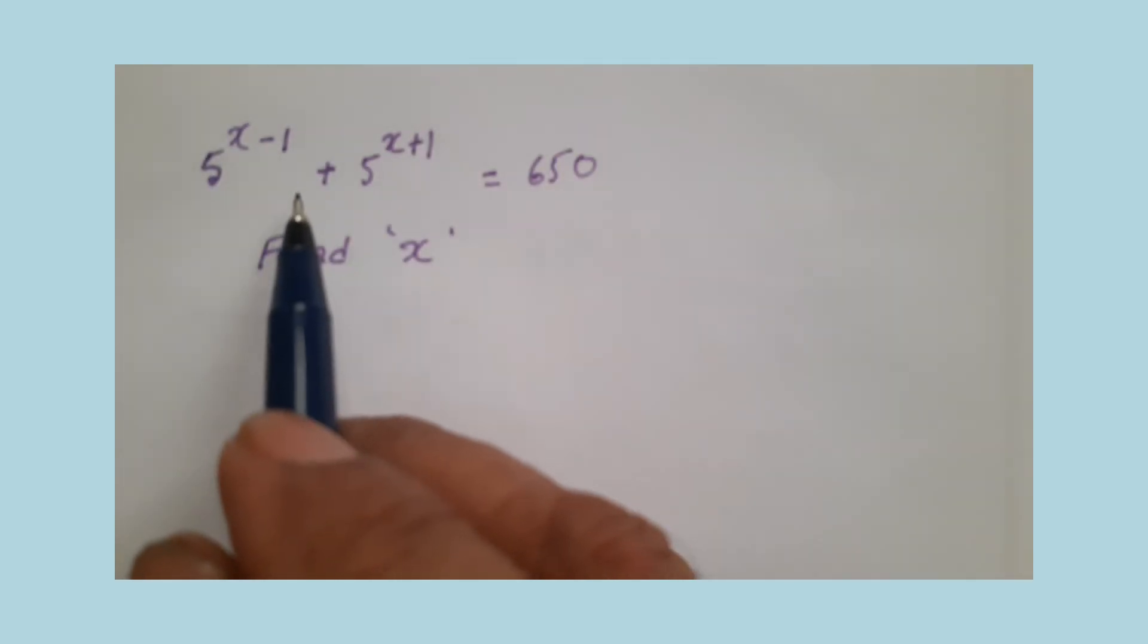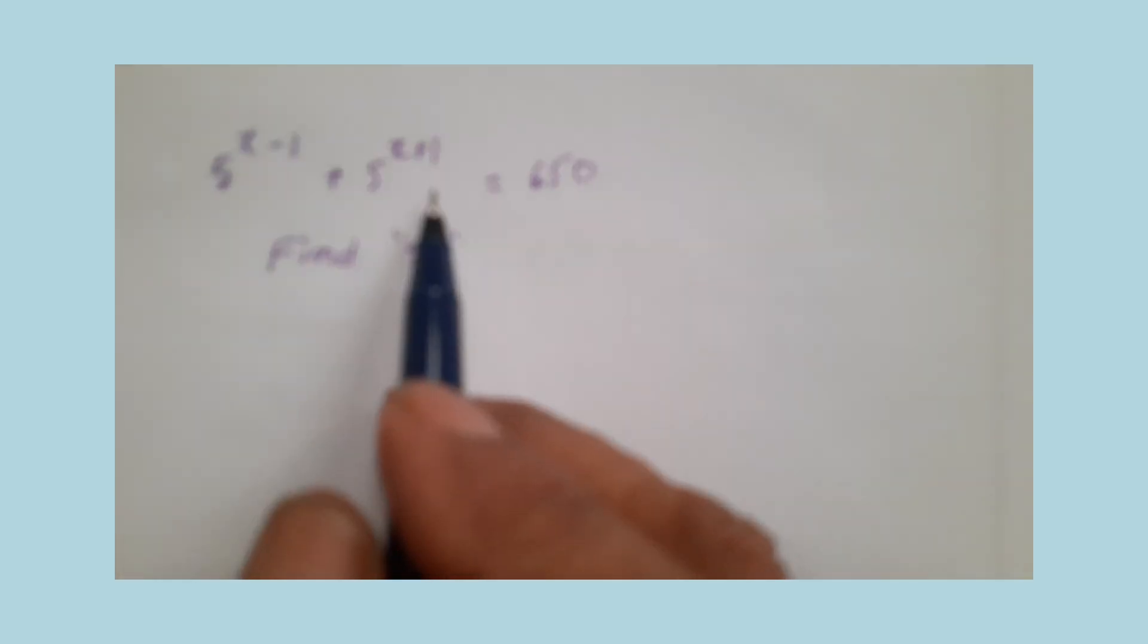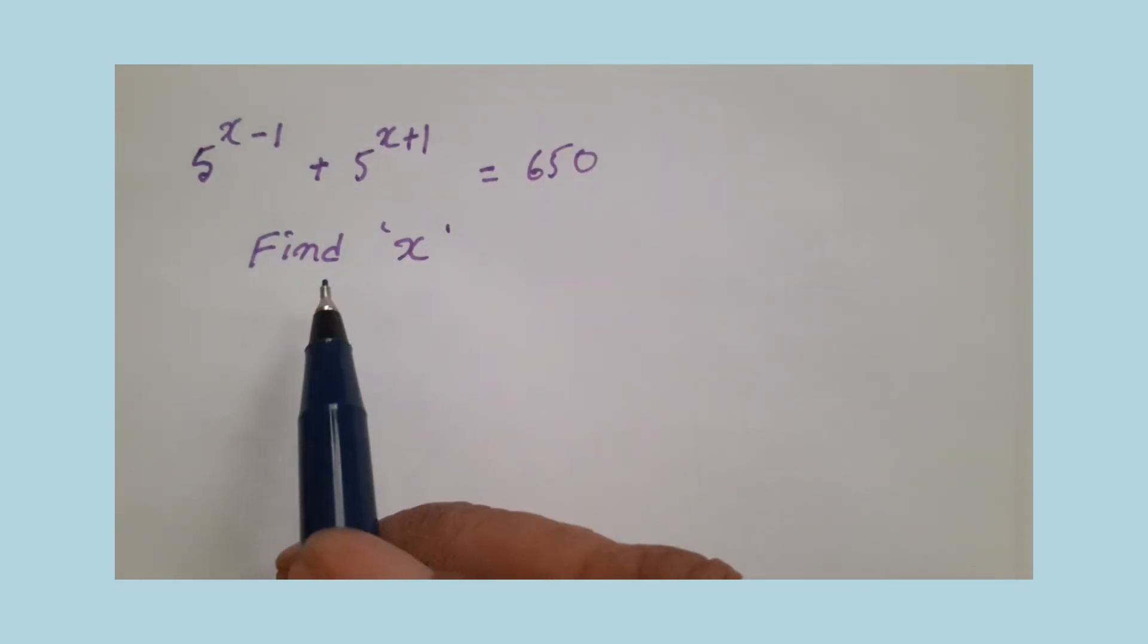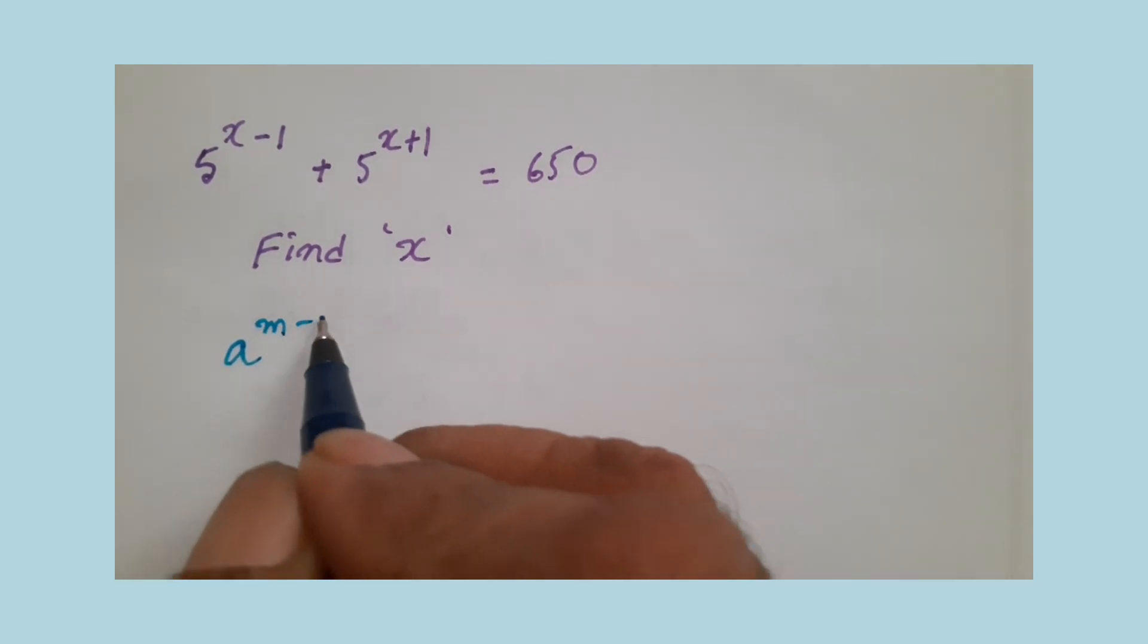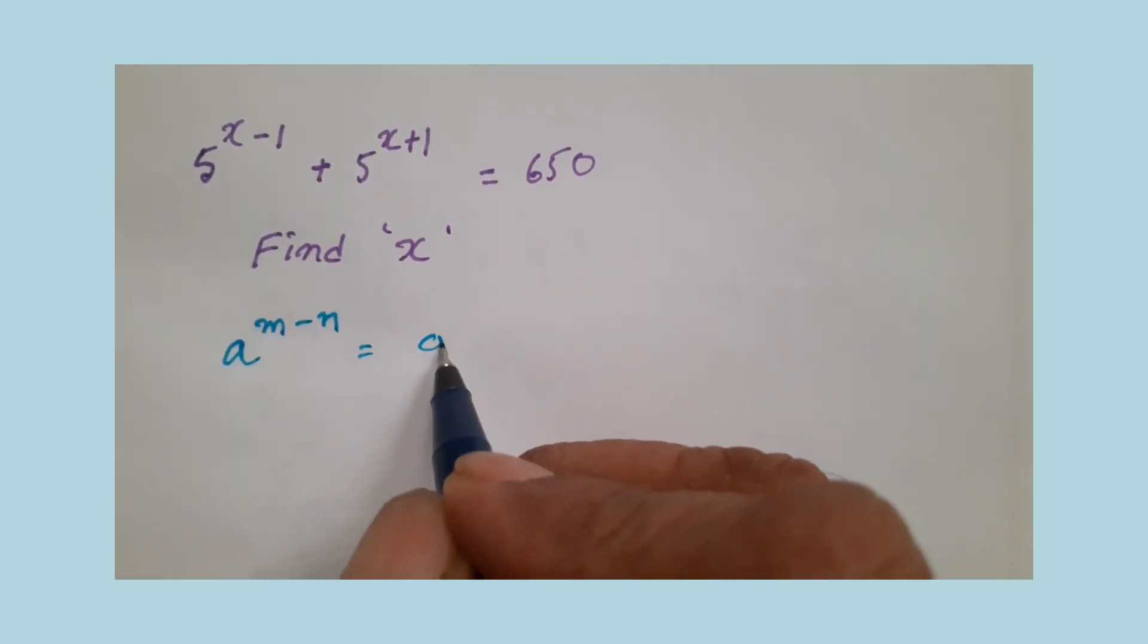5 power x minus 1 plus 5 power x plus 1 equals 650. Find x. Before doing this, recall two laws. First, a power m minus n can be written as a power m divided by a power n.